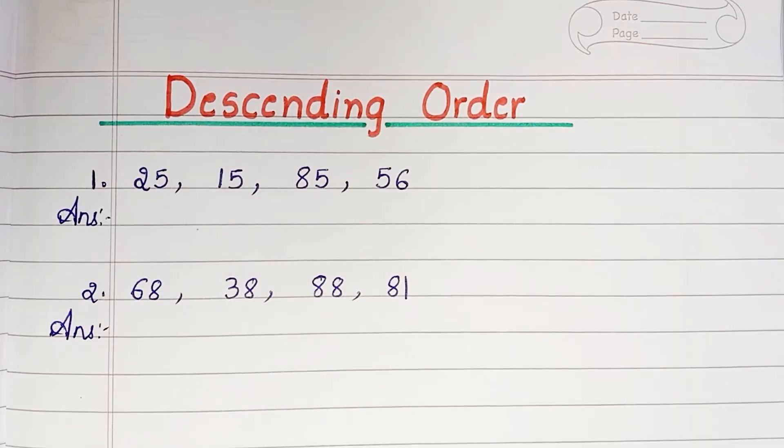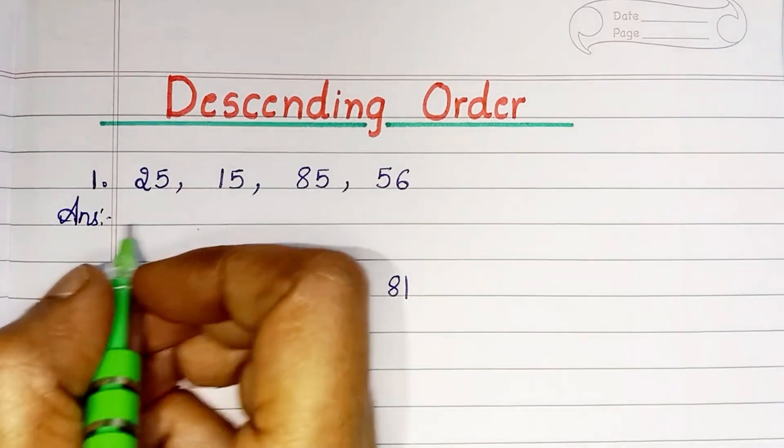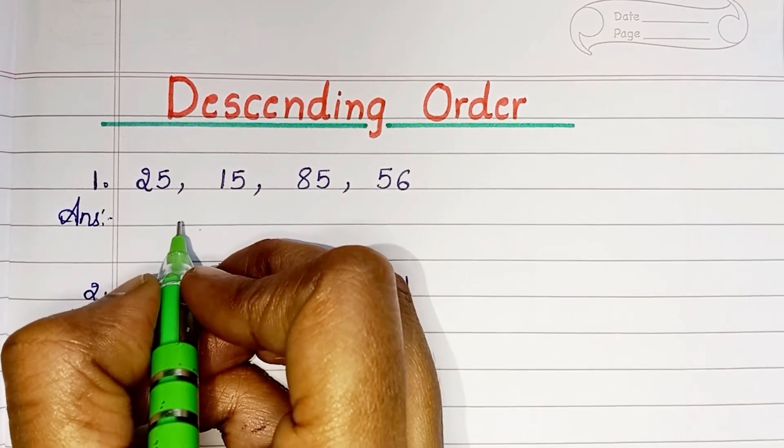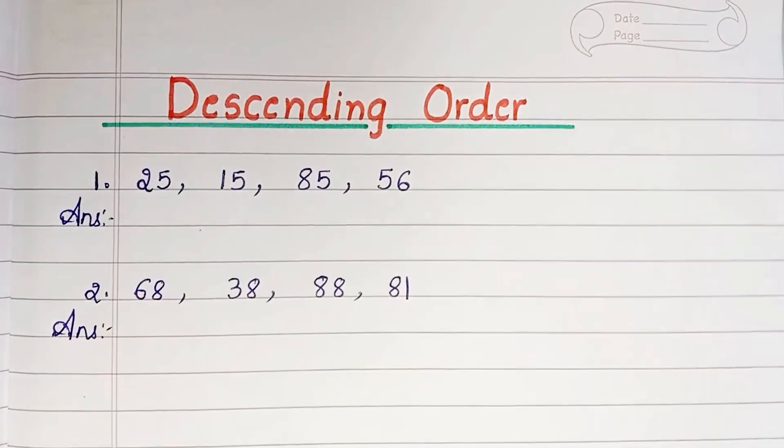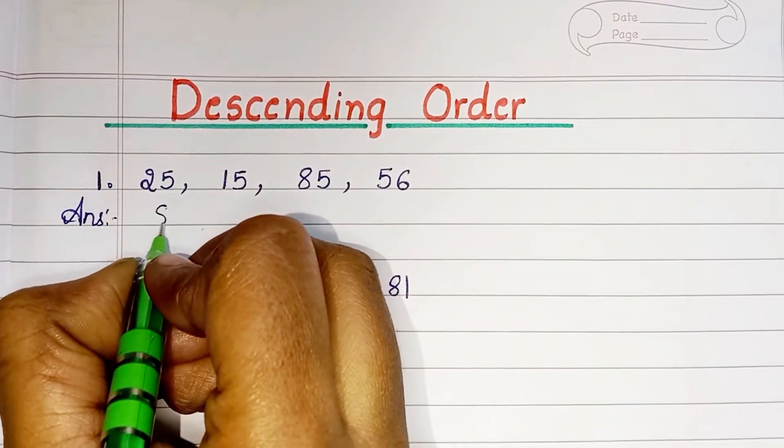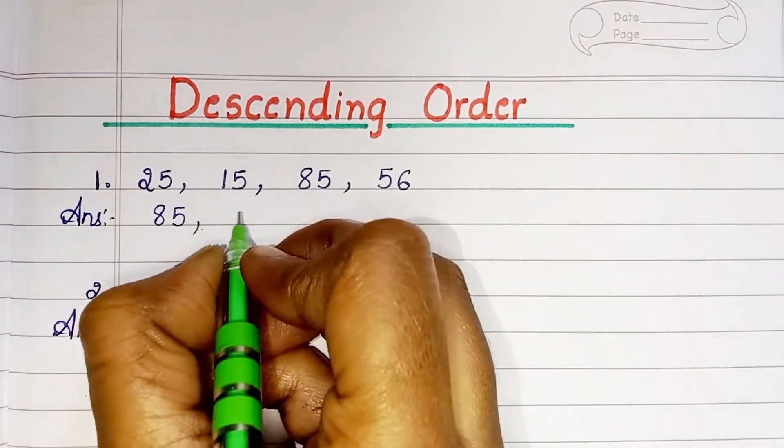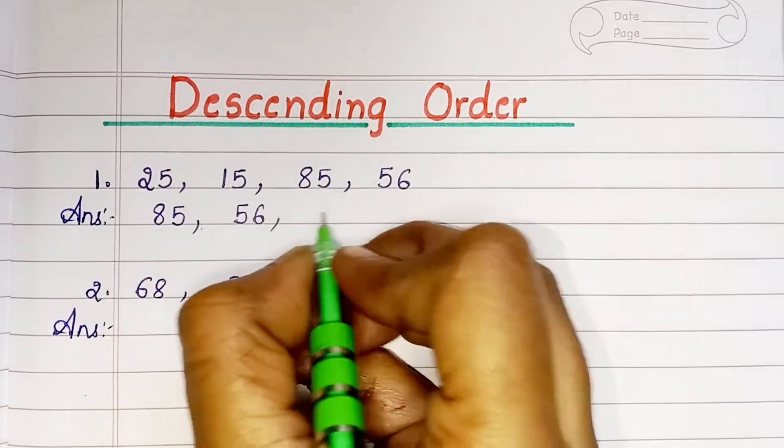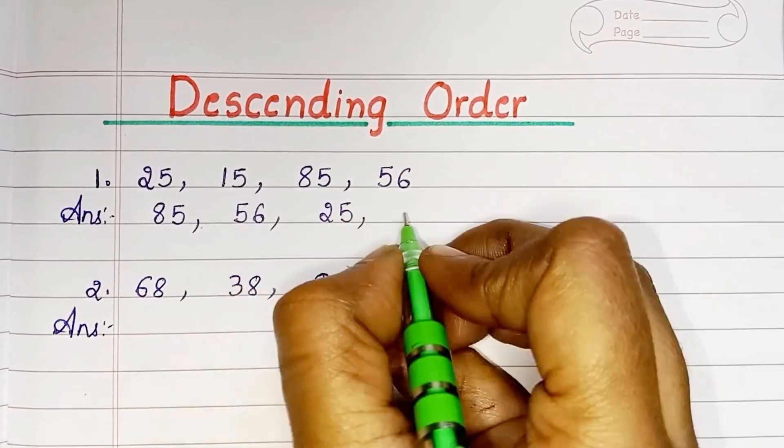Let us arrange these numbers in descending order: 25, 15, 85, 56. So the largest value is 85, then 56, 25, 15.